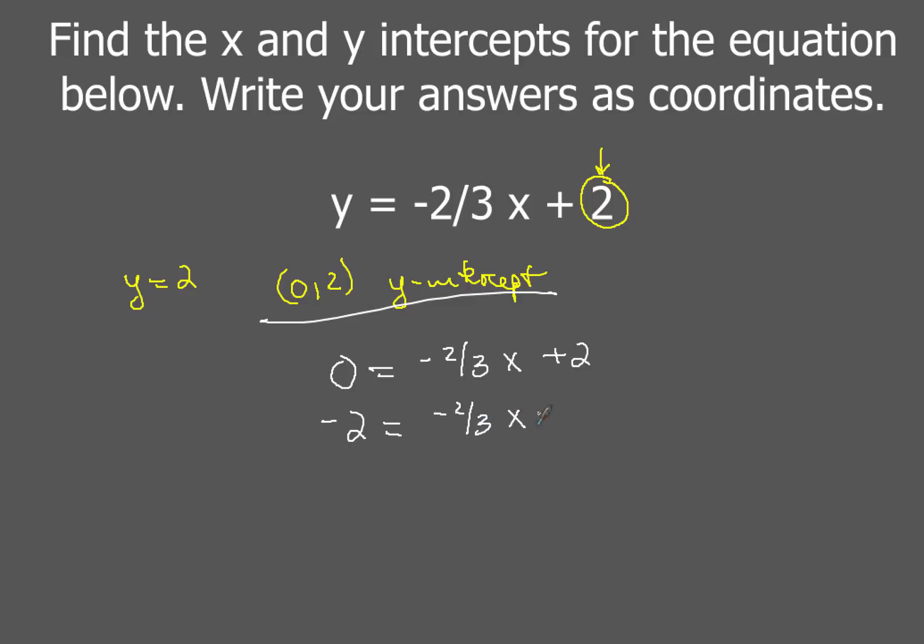Multiplying both sides by three, and some people will be able to do this in one step but I'm going to do it in two. So if you multiply both sides by three you'll get negative six equals negative two x and when you divide both sides by negative two of course you end up with three for the value of x. So the coordinates of the x intercept are going to be three comma zero.